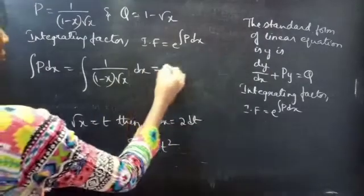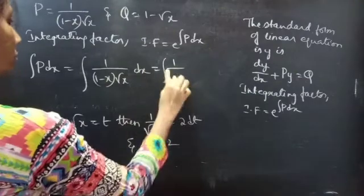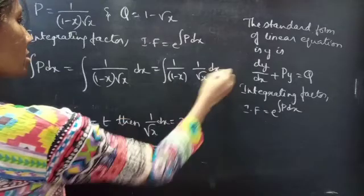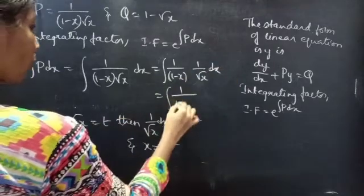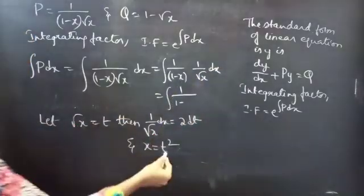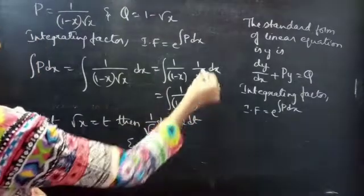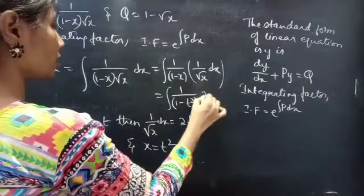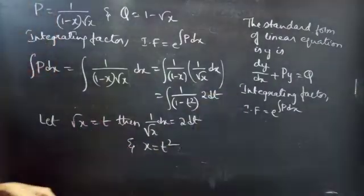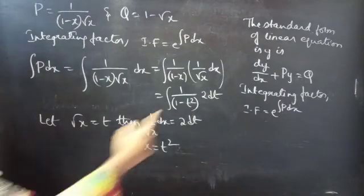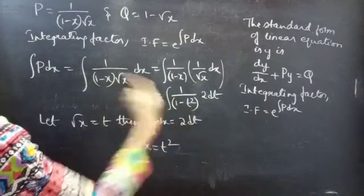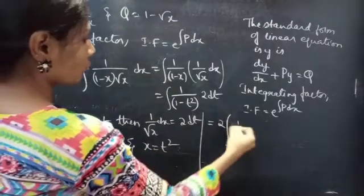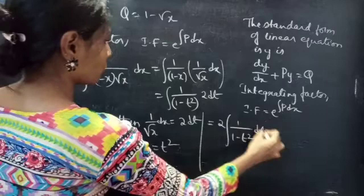Now let's evaluate the integral. We can rewrite 1/((1 minus x)·√x) dx as 1/(1 minus x) · (1/√x) dx. Replacing x by t² and (1/√x) dx by 2 dt, taking the constant 2 outside, this becomes 2 times the integral of 1/(1 minus t²) dt.